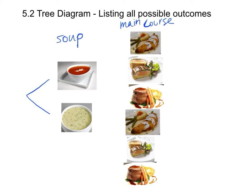Now, if we select the red soup, when we come to the main course we have three choices. We'll draw three different branches here.